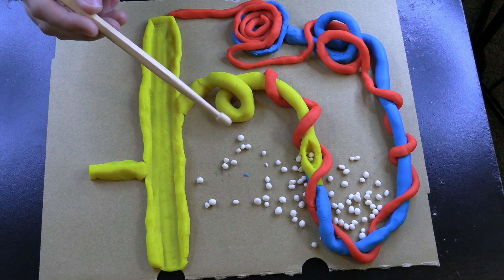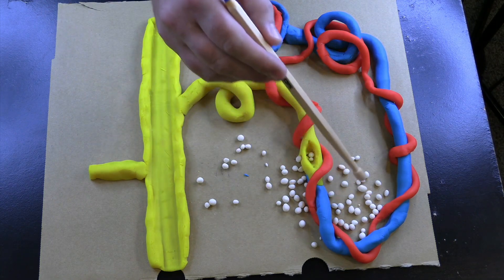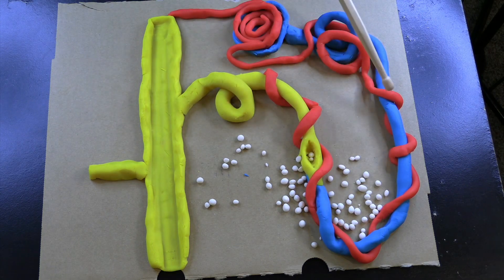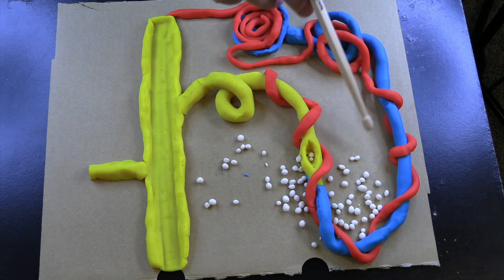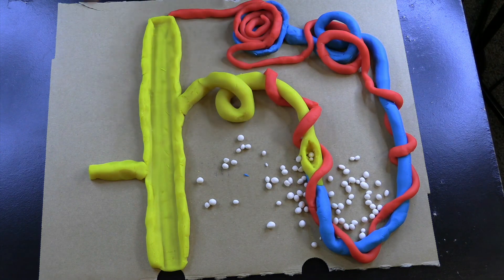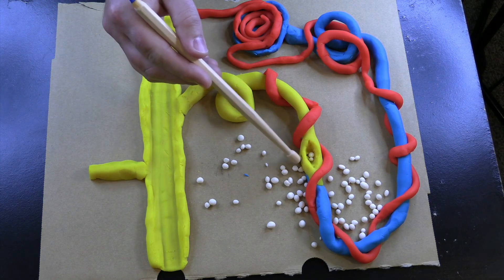So they can get reabsorbed into the efferent arteriole. Not all of it is going to get reabsorbed; a lot of it's just going to stay here. And that's what makes the water want to come out of the descending limb—because you've got this really salty environment here in the interstitium.